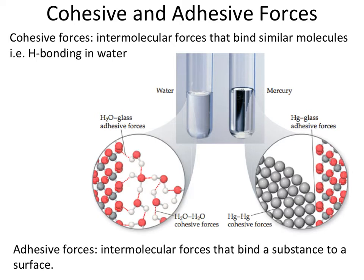Mercury, on the other hand, has atoms that like to interact with one another, so the cohesive forces here are very strong. This results in an inverted U-shape, because the cohesive forces are stronger than the adhesive forces that may form between the glassware and the mercury atoms. So in both cases we have adhesive and cohesive forces, but they cause a dramatically different effect depending on which forces are dominant.